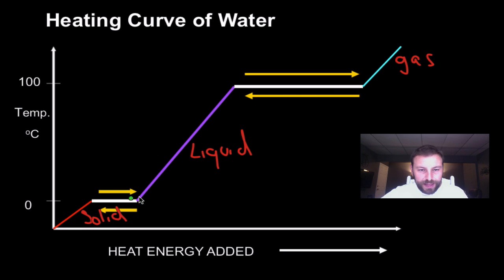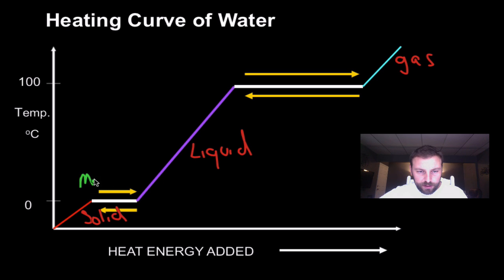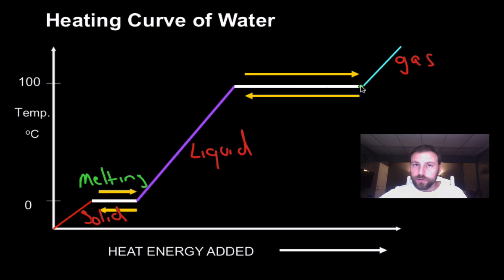These plateaus, our flat areas right here, are extremely important. These are where we have phase changes. So if we go from a solid to a liquid, that is our melting. And when we go from liquid to a gas, where there's no change in temperature, that is vaporization.